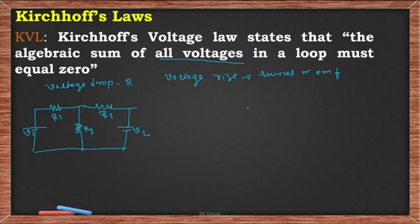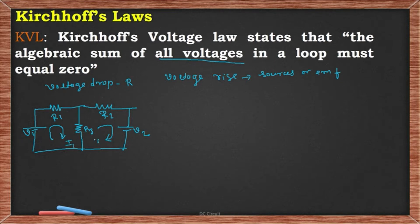The easiest way to apply KVL is to assume current always flows in the clockwise direction, irrespective of the direction of sources. Say the current in loop 1 is I1 and in loop 2 is I2. Let us apply KVL to loop 1.